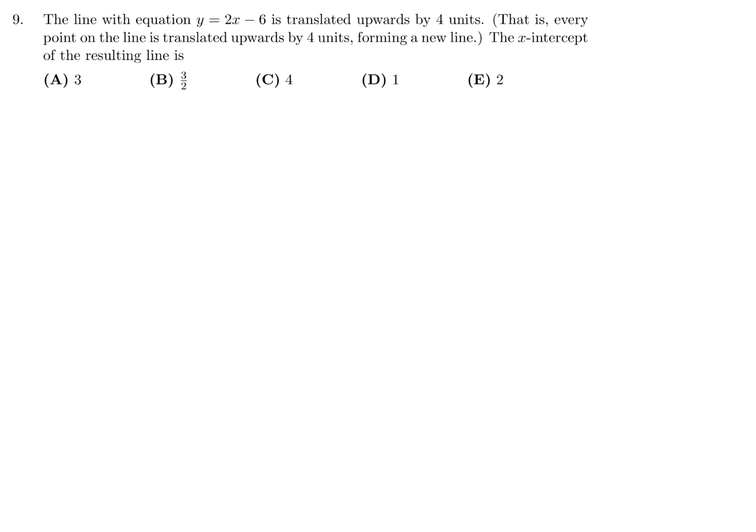The line with the equation y equals 2x minus 6 is translated upwards by 4 units. Every point on the line is translated upward by 4 units forming a new line. The x-intercept of the resulting line is: let us draw a quick graph. The line y equals 2x minus 6, when x is 0, y is minus 6, and when x is 3, we get y equal to 0. There's my line, now let's join those two points.